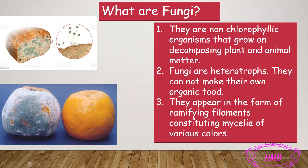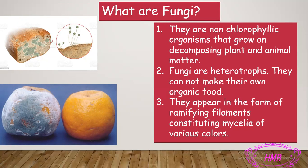Fungi appear in the form of ramifying filaments constituting mycelia of various colors. Looking at this picture, we see a normal orange versus one with green color, which refers to the growth of fungi on the fruit. This green or brownish color is the growth of fungi on organic matter. Under the microscope, fungi appear as branches — mycelia — which grow to fix themselves onto the organic matter they feed on.